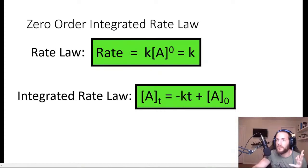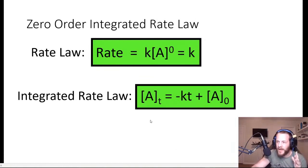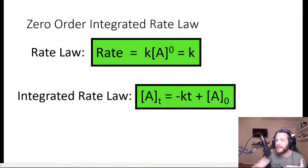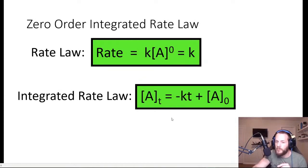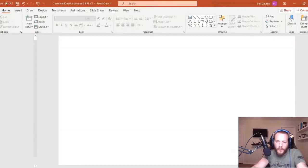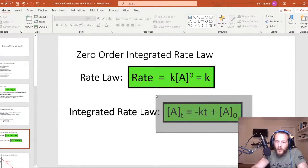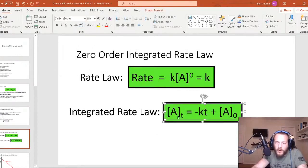I really don't like just jumping to an equation without deriving it, but general chemistry students are kind of all over the place when it comes to their knowledge of calculus. When I was taking general chemistry, I had not really taken calculus at that time. So for the zero order integrated rate law, the equation looks like this: the concentration of A at time t is equal to minus kt — that's the rate constant times time — plus the initial concentration of A.